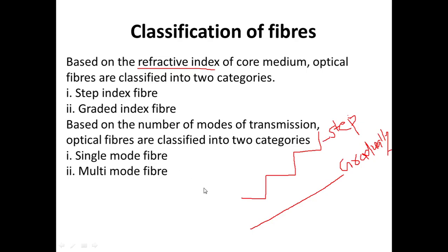If the refractive index is changing gradually, then we call these graded index fibers. This classification depends on how the refractive index of the core is varying from the core to the cladding interface.